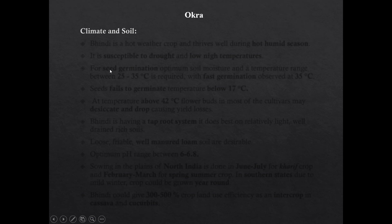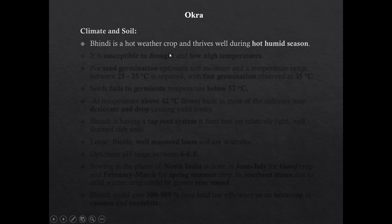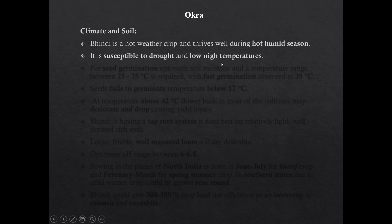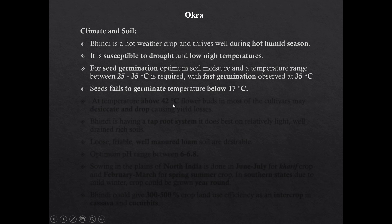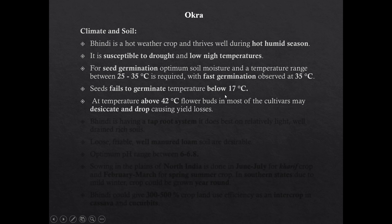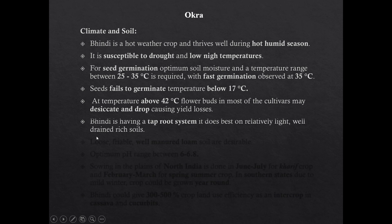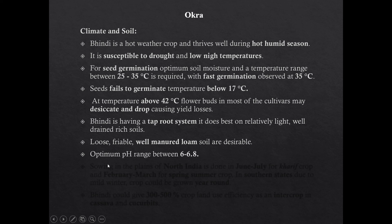Okra is a hot weather crop and thrives well during hot and humid season. It is susceptible to drought and low night temperature. For seed germination, optimum soil moisture and temperature range is between 25 to 35 degree Celsius. Fastest seed germination is observed at 35 degree Celsius. Seeds fail to germinate at temperature below 17 degree Celsius. At temperature above 42 degree Celsius, flower buds of most cultivars may desiccate and drop, causing heavy yield losses. Okra has a taproot system and does best on relatively light, well-drained, rich soil. Optimum pH for okra cultivation is 6.0 to 6.8.